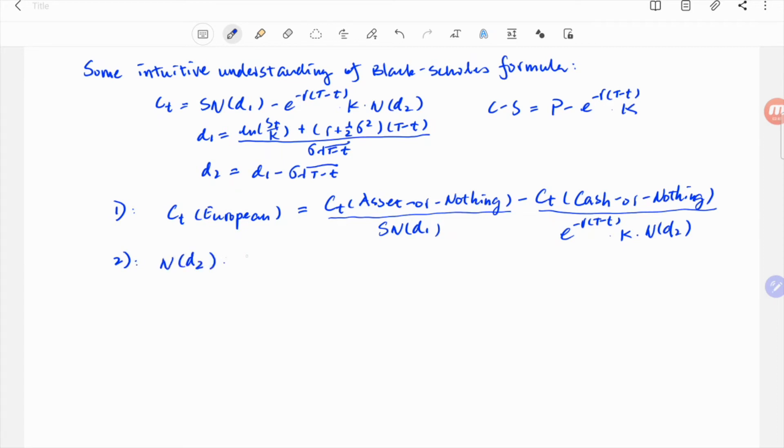The second insight is that the N(d2) term is the risk-neutral probability of in-the-money at maturity. This is sometimes a little confusing because the first term, N(d1), looks more like the in-the-money probability to some people. The key to the understanding is that S is a variable, while K is a constant.